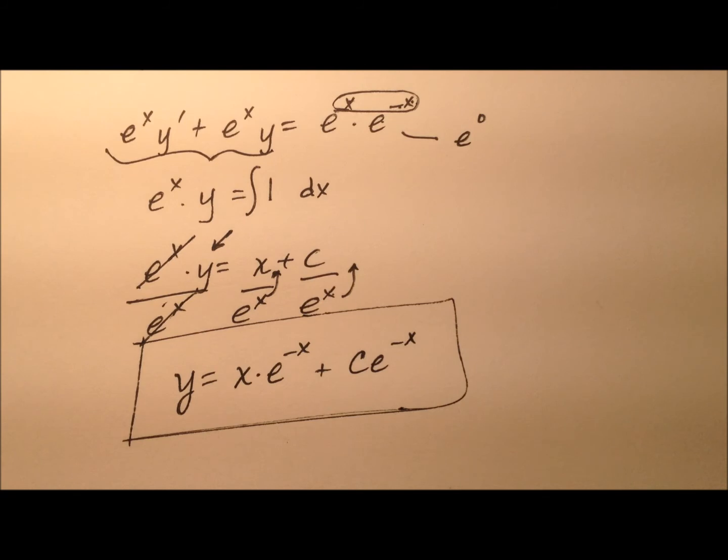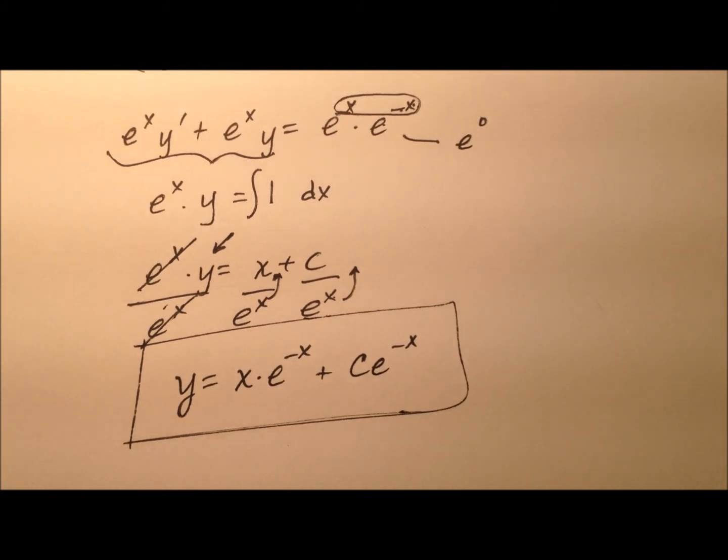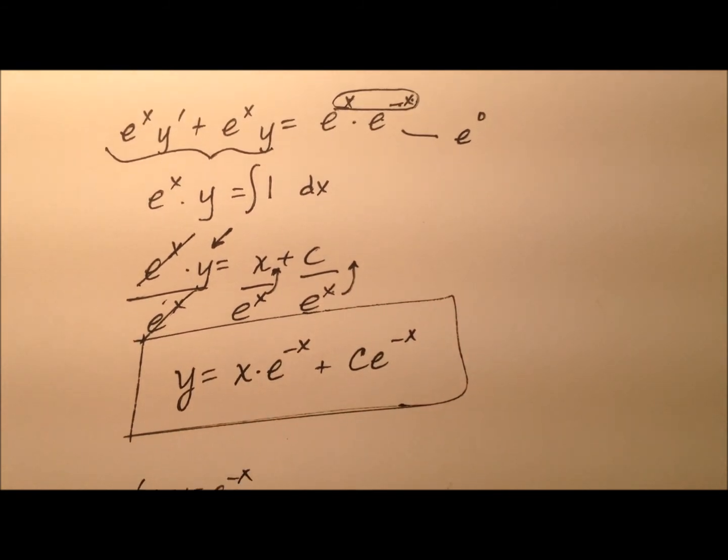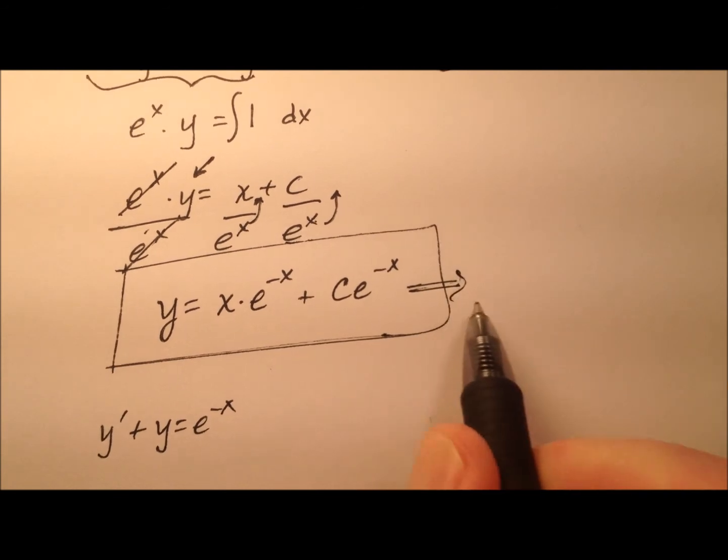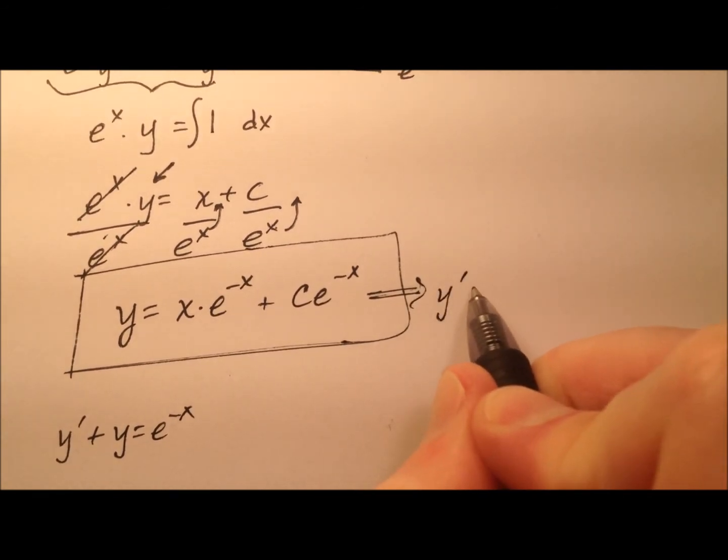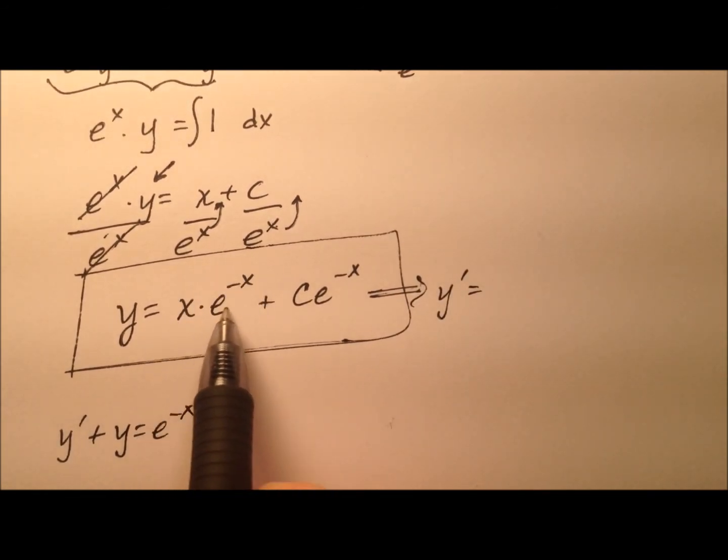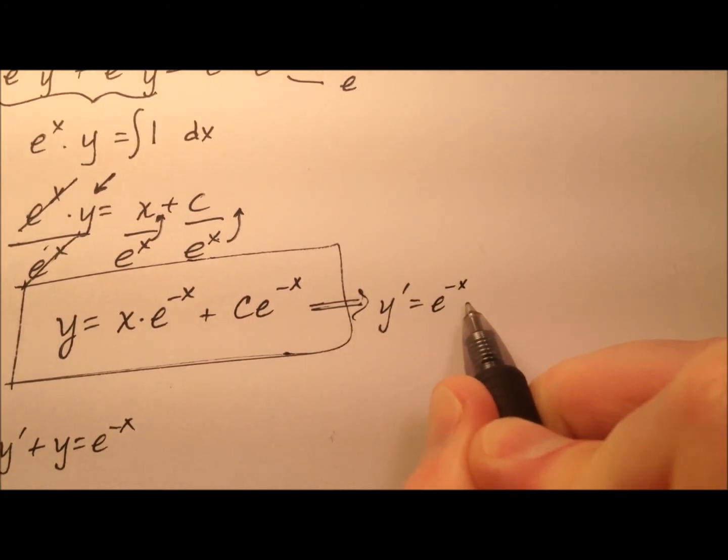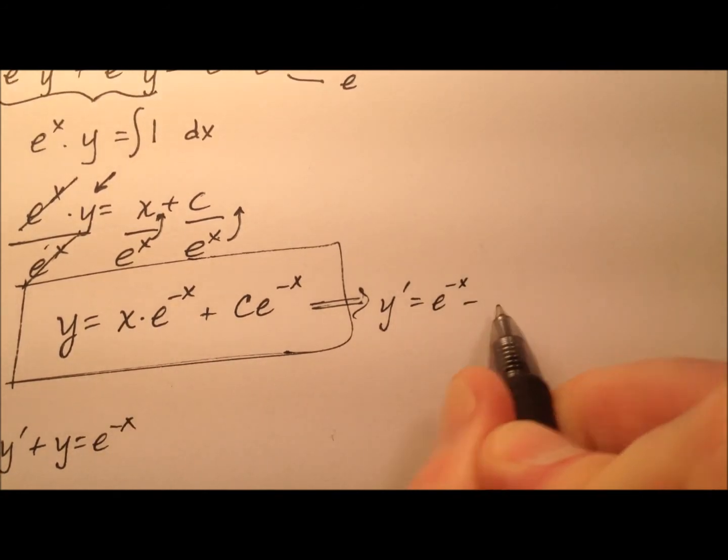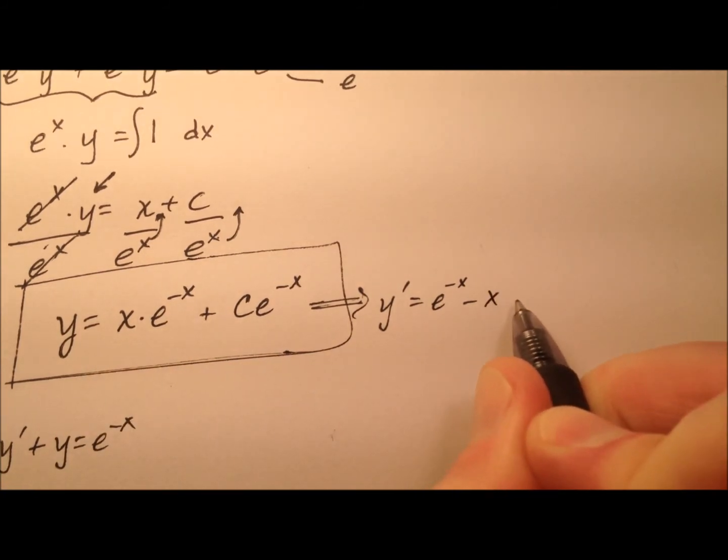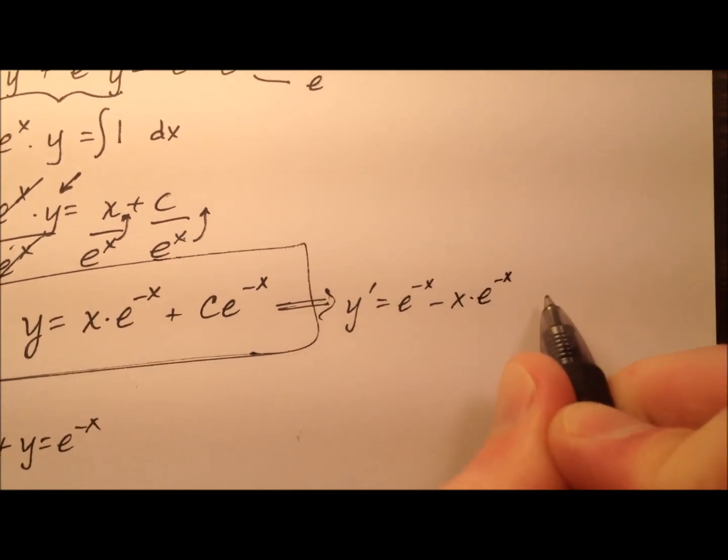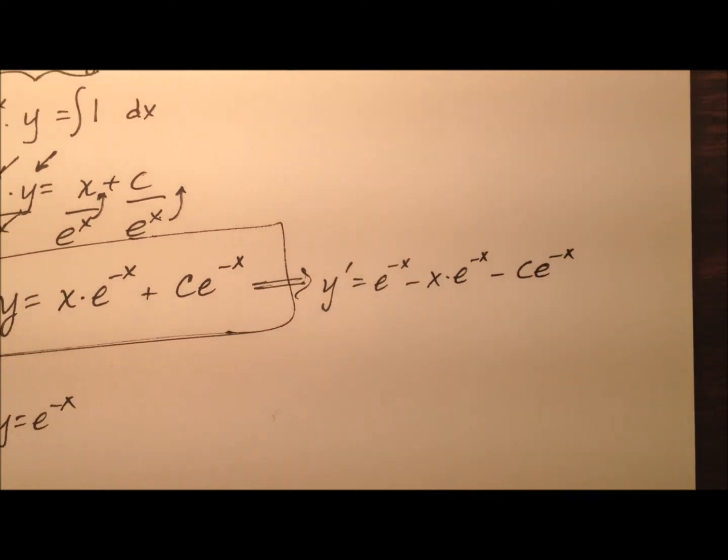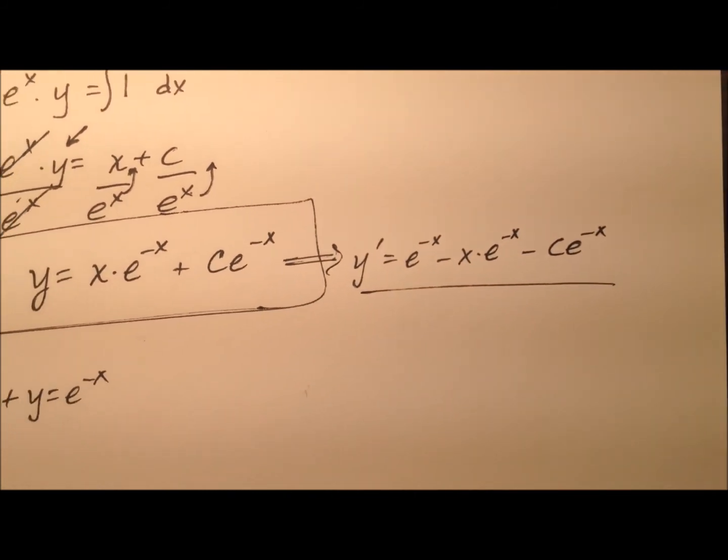And what's nice about this is I can go ahead and plug it back into my original differential equation, which was y' + y = e^(-x). So we need to find the derivative here. So y' will equal, and I'm going to need to use the product rule here, so the derivative of the first times the second, and then we have the minus, because we end up using chain rule, x times e^(-x), and then minus c e^(-x), and that'll be the derivative.